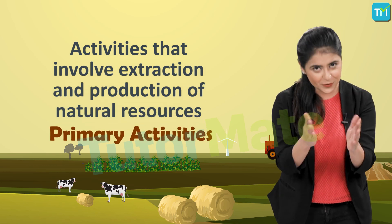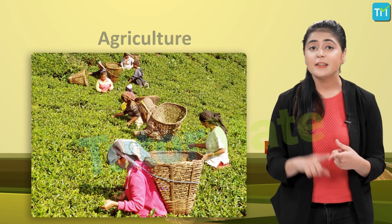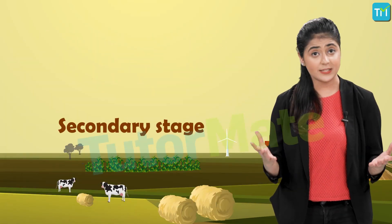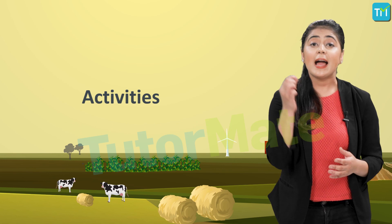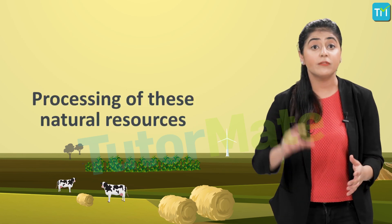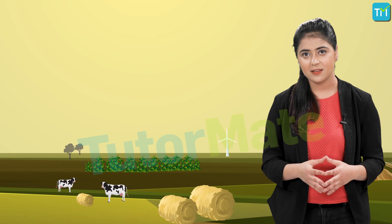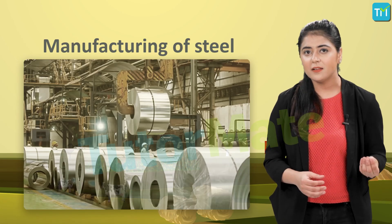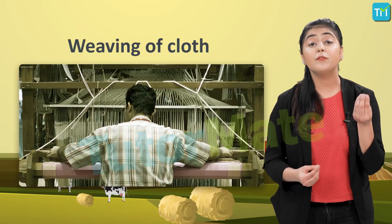All activities that involve extraction and production of natural resources are called primary activities — for example, agriculture, fishing, and gathering. In the secondary stage, activities are concerned with the processing of these natural resources. Manufacturing of steel, baking of bread, and weaving of cloth are secondary activities.